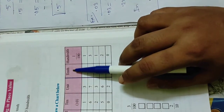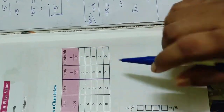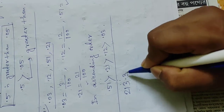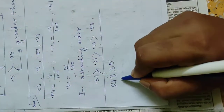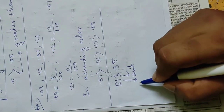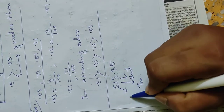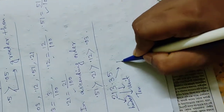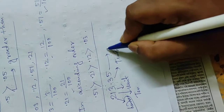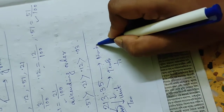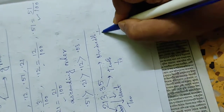After the decimal point: this is the 10th position, that is 1 by 10; and the 100th position, that is 1 by 100. So here, this is unit position, this is 10th position, this is 100th position, and this number is the 10th position, that is 1 by 10th, and this is the 100th position, that is 1 by 100th.